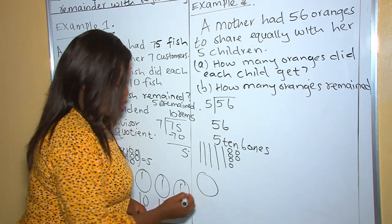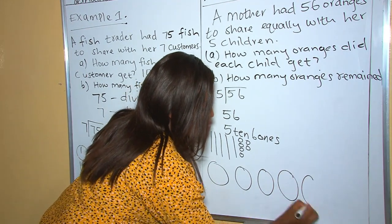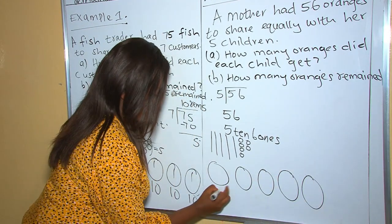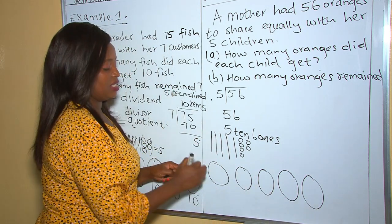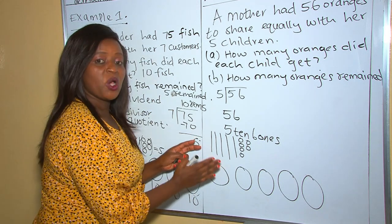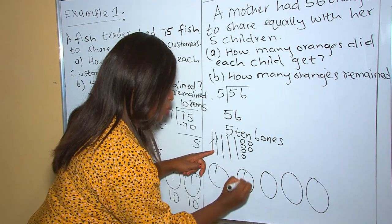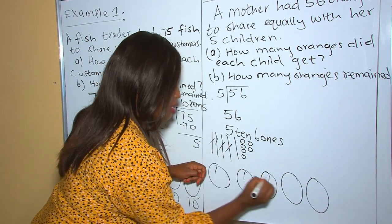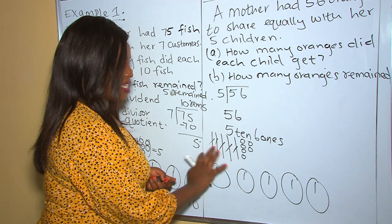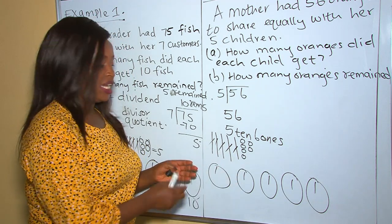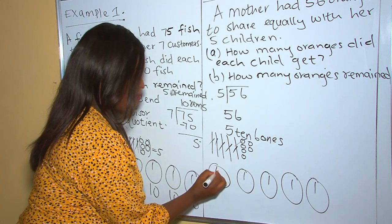The children are five. Here are the children: first, second, third, fourth, and fifth. Now let's start sharing the oranges. We always start with our tens. The first ten goes to the first child, the second ten to the second, the third, the fourth, and the fifth ten to the fifth child. Now we are done with our tens. Let's go to our ones — there are 6 ones.